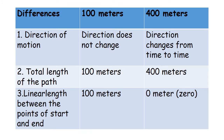The differences between 100m and 400m events: In the 100m event, direction of motion does not change, while in the 400m event, direction changes from time to time. The total path length is 100m for the 100m track and 400m for the 400m track. The linear length between start and end points is 100m for the 100m runner, but 0m for the 400m runner, since the 400m runner ends at the same point where they started. Therefore, the displacement of the 100m runner is 100m, and the displacement of the 400m runner is 0.